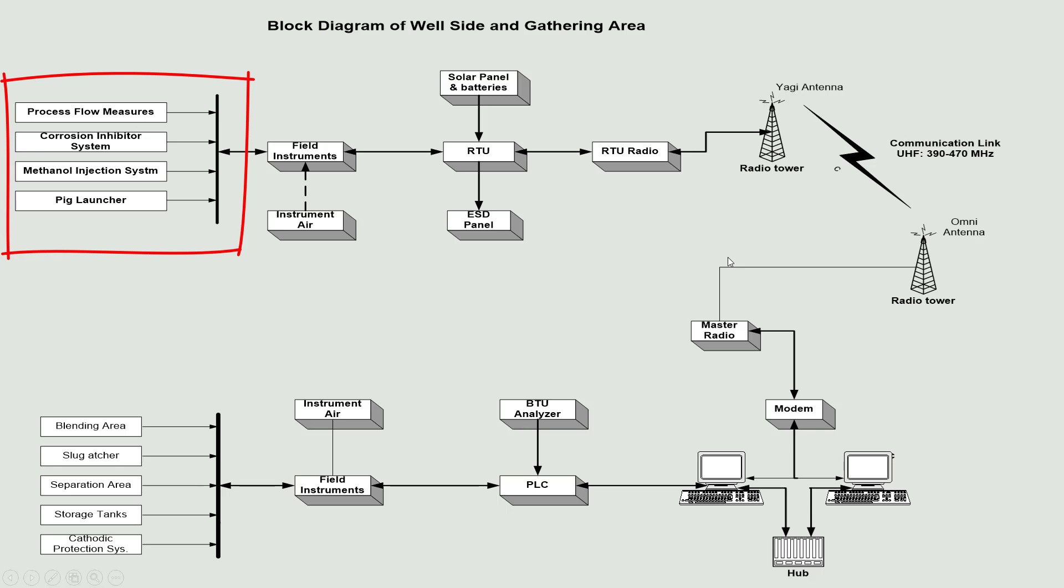At these remote sites, field instruments are deployed to collect data just like in a factory setting. However, instead of sending data directly to a central control room, it's transmitted to RTUs, remote terminal units, located on site. RTUs, remote terminal units, are like messengers. There are two types, intelligent and non-intelligent RTUs.